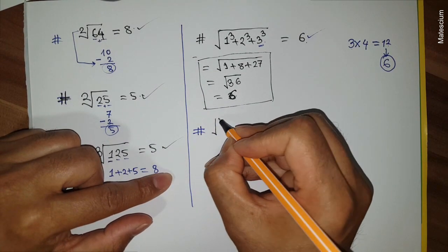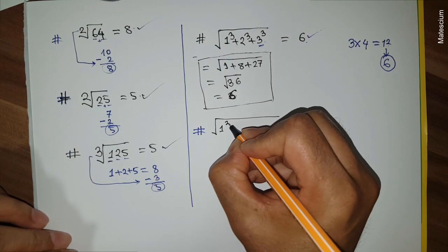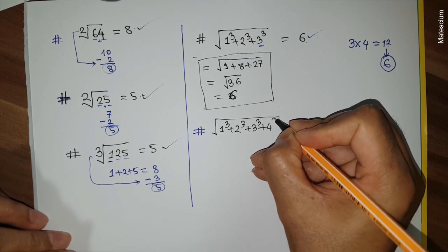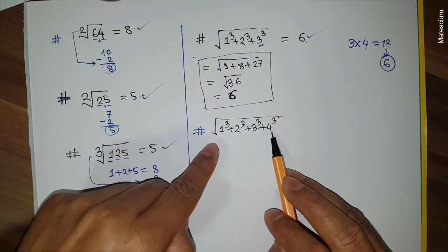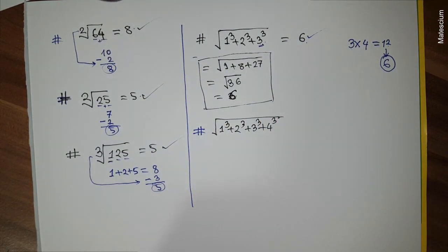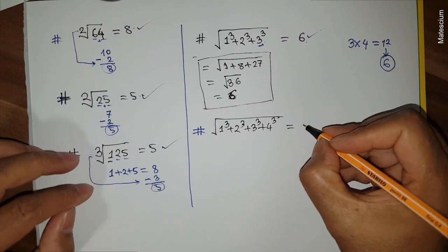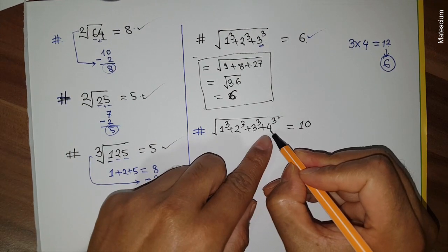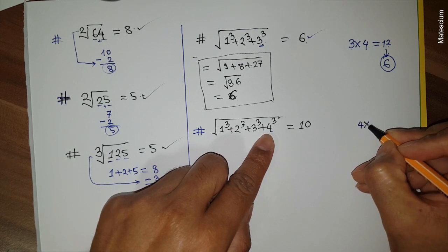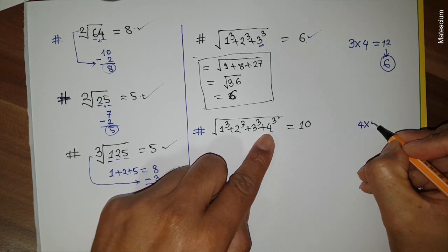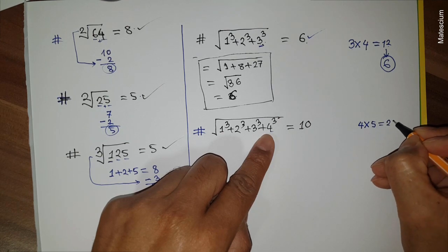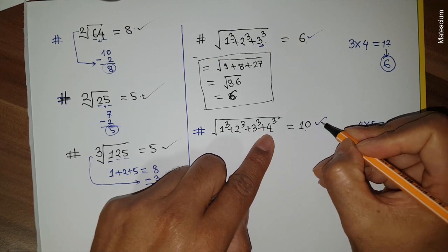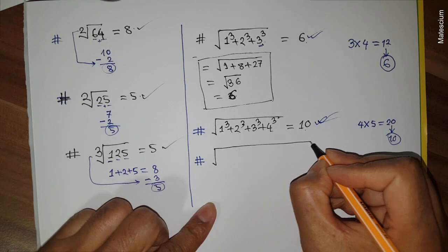Let's expand: 1³ + 2³ + 3³ + 4³. I expand one step further — what's the answer within one second? The answer is 10. Exactly the same way: the last number is 4, multiply by its next number 5 — 4 times 5 is 20 — and half of 20 is 10. That's the answer. Simple, right?